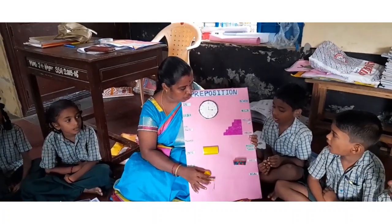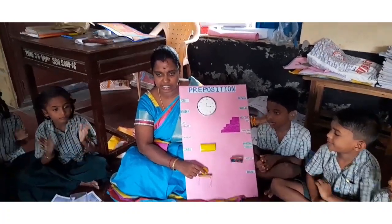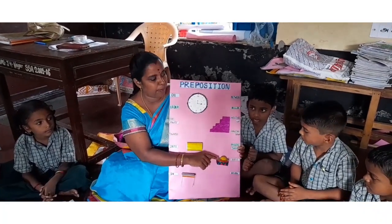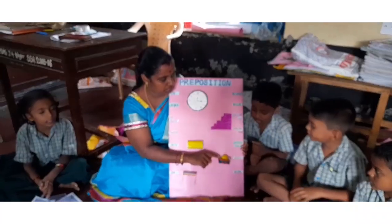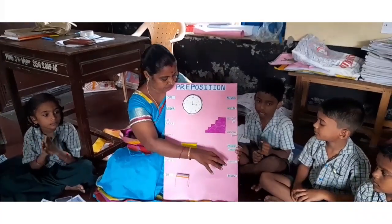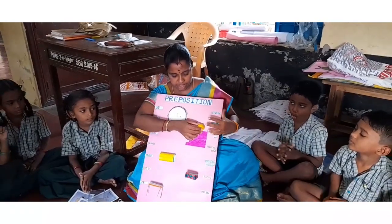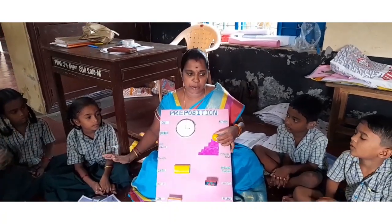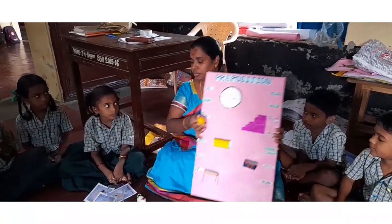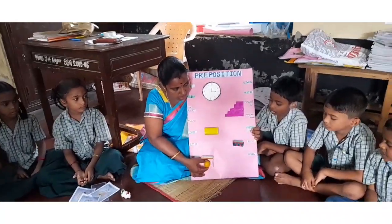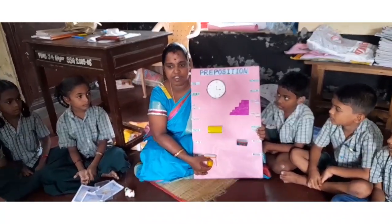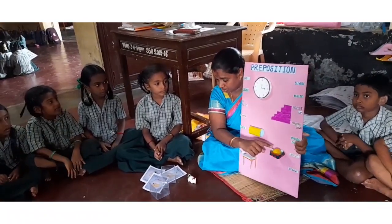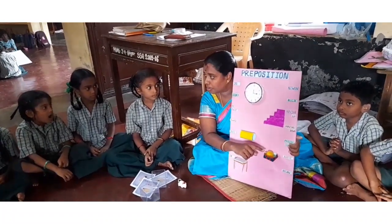Say, where is the ball? On the table. Very good. Now Nafis, you say where is the ball? In the box. Very good. Where is the ball? In the box. Where is the ball? On the stairs. Very good. Where is the ball? On the stairs.